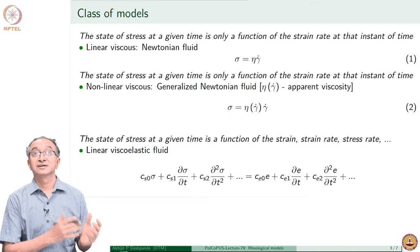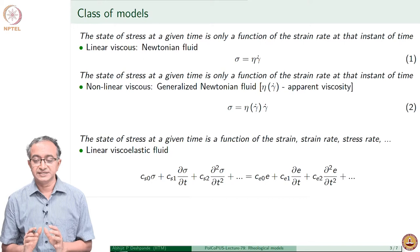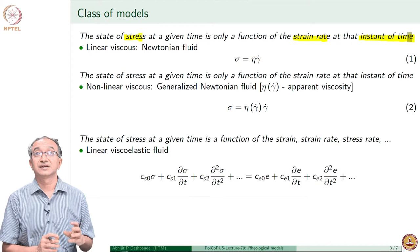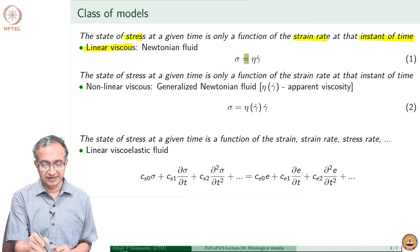For fluids, we basically have the viscous models where the state of stress is only a function of strain rate at that instant of time. Stress is related to only strain rate, and the value of stress at a given instant of time is directly related to the strain rate at that instant. The most commonly known example is the Newtonian fluid, where it is a linear model between stress and strain rate, and the proportionality constant is viscosity.